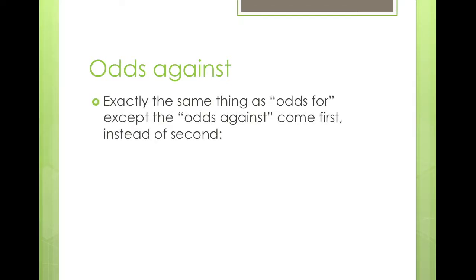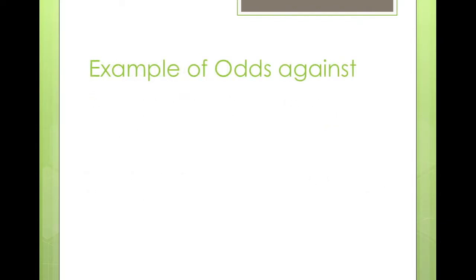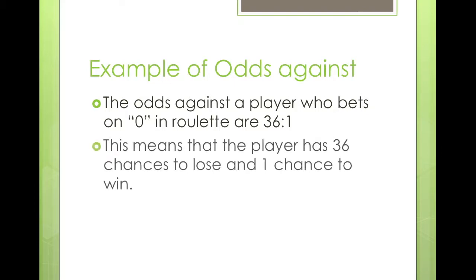Odds against is exactly the same as odds for, except the undesirable outcome comes first in the ratio instead of second. So instead, you have undesirable to desirable. For example, the odds against a player who bets on zero in roulette are 36 to one, meaning the player has 36 chances to lose and one chance to win. If you wanted to express the odds for instead, it would be one to 36.